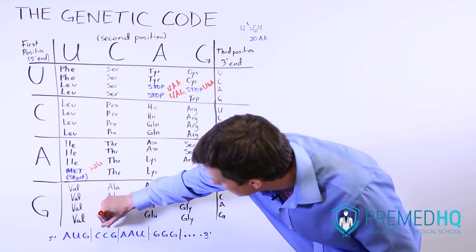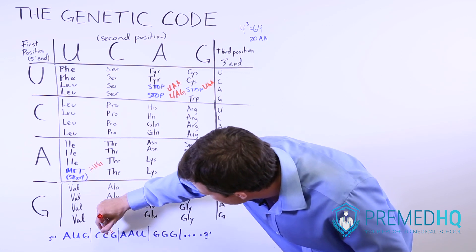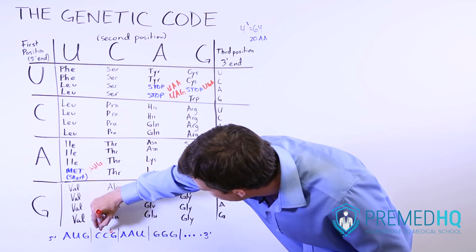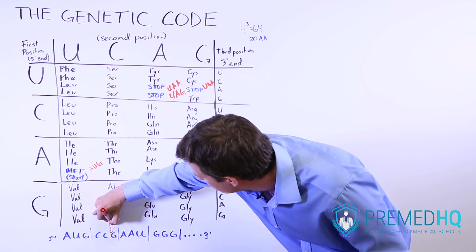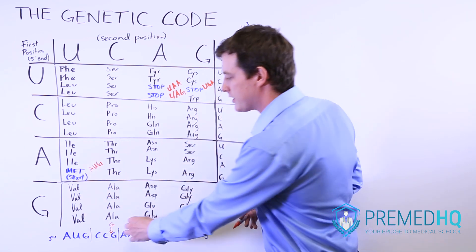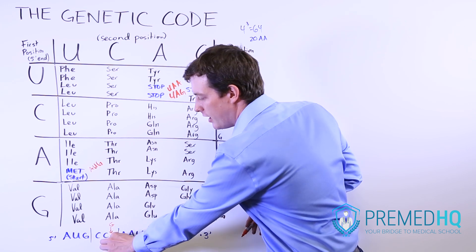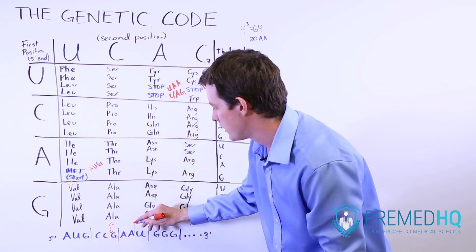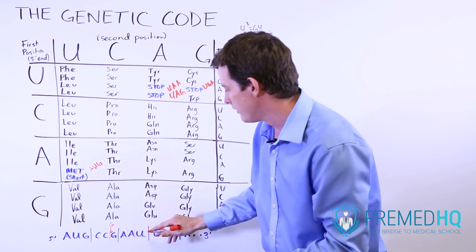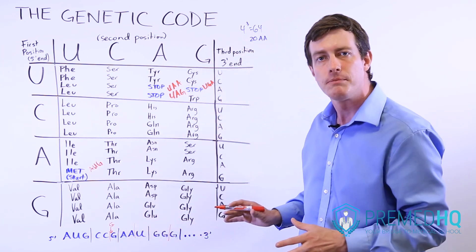So for example, let's just say that we were to insert a base here. So let's just say we input, it could even be a G, it could be the correct one. But notice that what this does is, as soon as we put a G in here, now we push this G over to this one. And so now it's going to be a GAA reading frame, and then it's going to be a UGG reading frame.